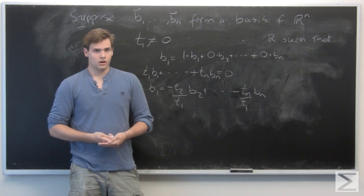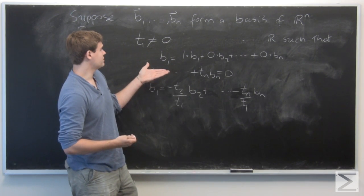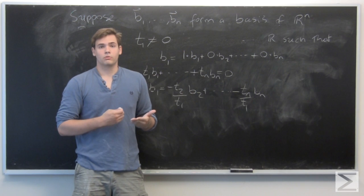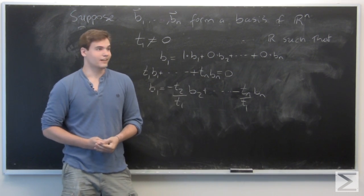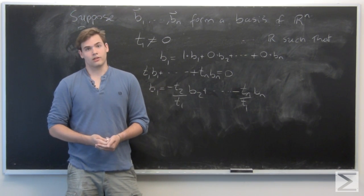So since it's a contradiction, our initial assumption that all the T₁s were not equal to 0 was false. So the fact follows now that they all must actually be equal to 0 and the claim follows.